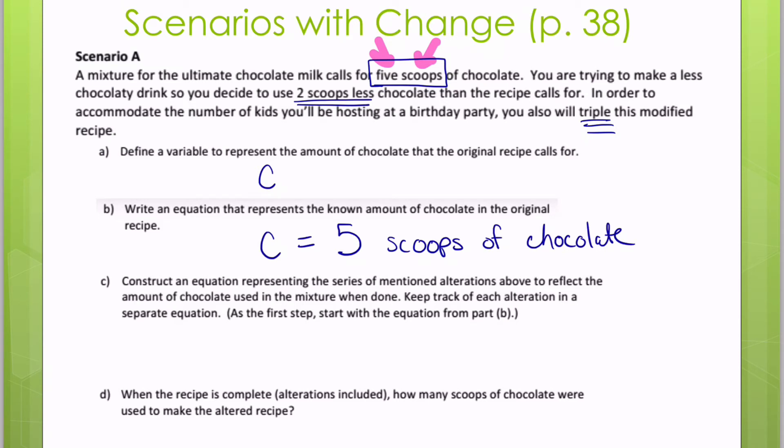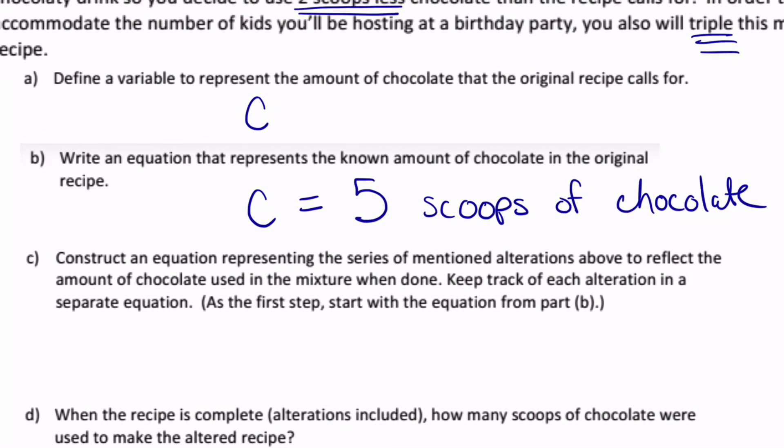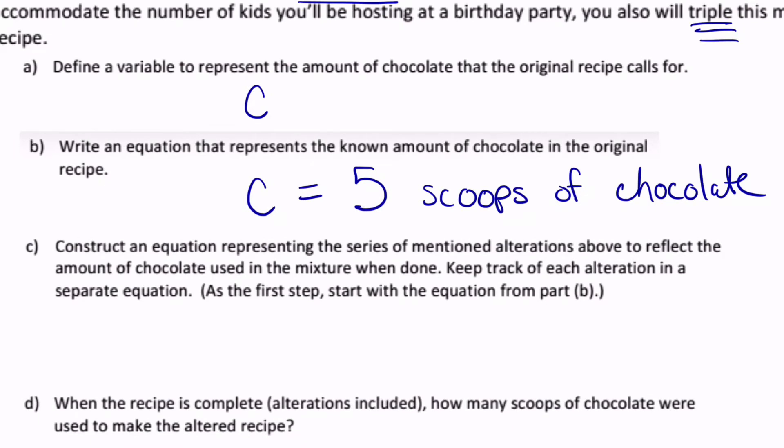Part C asks us to construct an equation representing the series of mentioned alterations above to reflect the amount of chocolate used in the mixture when done. So remember, I know that it's using two scoops less. So I'm going to represent that by subtracting two. So C minus two equals five minus two because I am taking off those two scoops of chocolate. So now I have C minus two equals three.